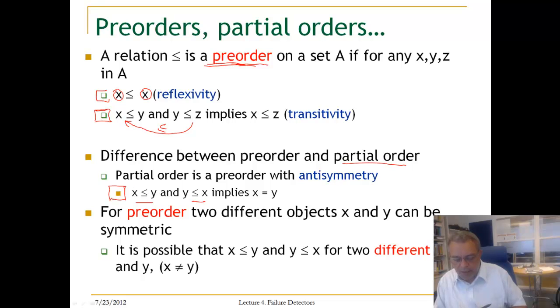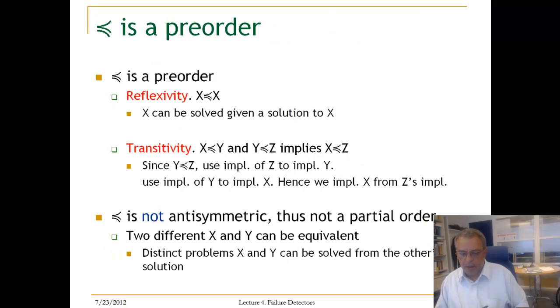Which means that it is possible that X is less or equal Y and Y less or equal X for two different objects X and Y, that are not equal. So reducibility is a pre-order relationship.